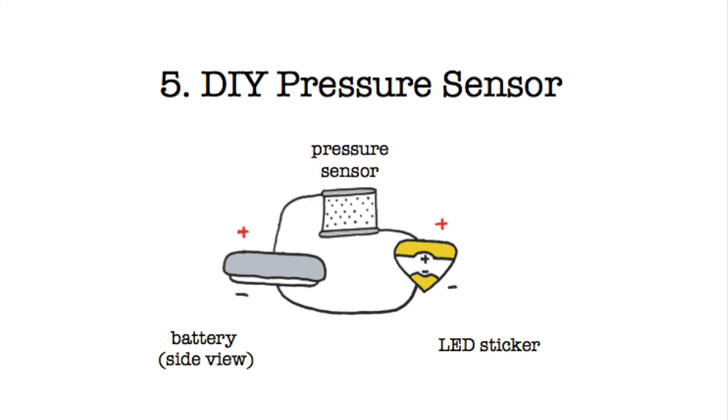When you don't press, the resistance is high because the conductive particles are far apart and little electricity can flow through the sheet. As a result, your light will be dim.